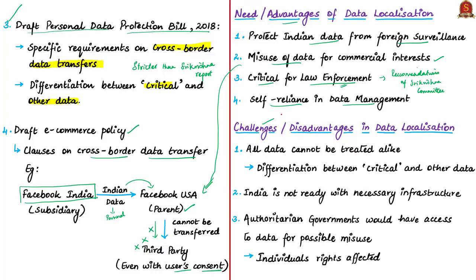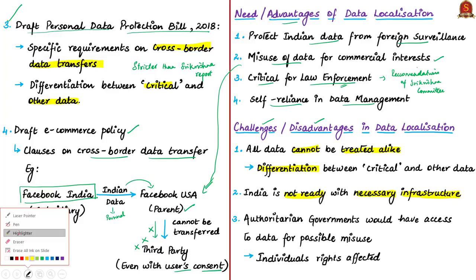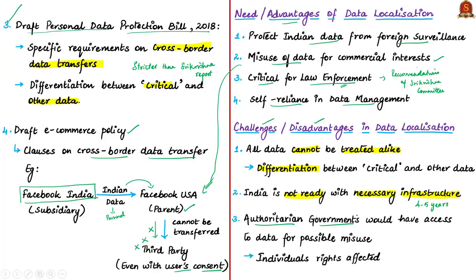Now let us see some of the challenges or disadvantages in data localization. The first challenge, as said in the Justice Shri Krishna Committee report, is that all data cannot be treated alike — there needs to be differentiation between critical and non-critical data. The next challenge is that India is still not ready with the necessary infrastructure for data localization; it would take at least four to five years. Another challenge is that if an authoritarian government comes to power in India, it would have access to the entire locally stored data and could misuse it, thereby affecting individual rights and freedoms.